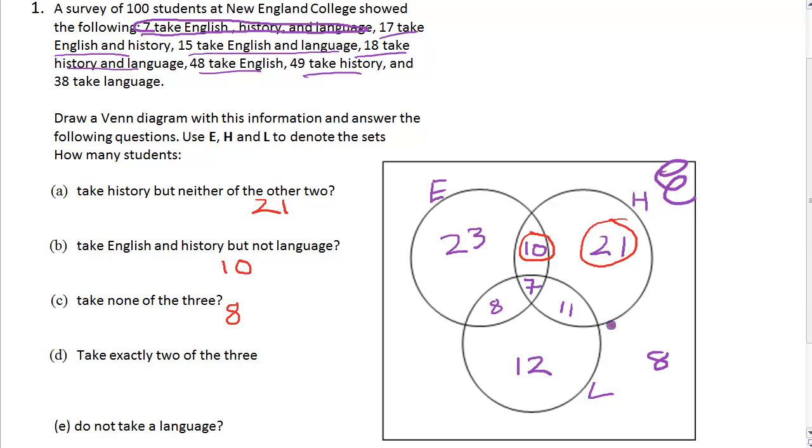Take exactly 2 of the 3. That's going to include that 10 because there's 2 there - English and History. Let's use a different color. We've got 10 there, 8 here just doing English and Language, and 11 here just doing Language and History. That gets us 29.